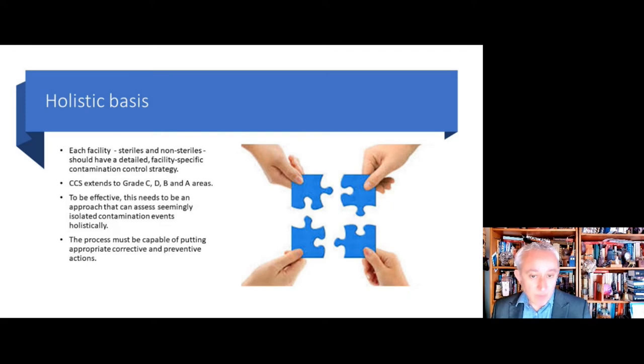Now I mentioned the holistic basis, so we do need to have this interconnectedness and understanding that process flows, use of airlocks, use of changing rooms, how we move equipment around the facility, each one of these is really important. There should be this overarching governing approach that can assess to see if what might be seemingly isolated contamination events need to be reviewed holistically. This also helps when we're formulating corrective and preventative actions, because one key expectation is to always ask what else might have been affected. One individual issue might actually be bigger than it was first realized.